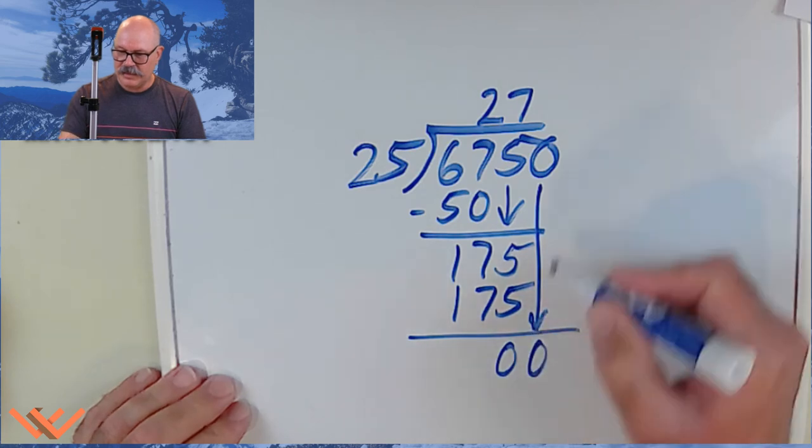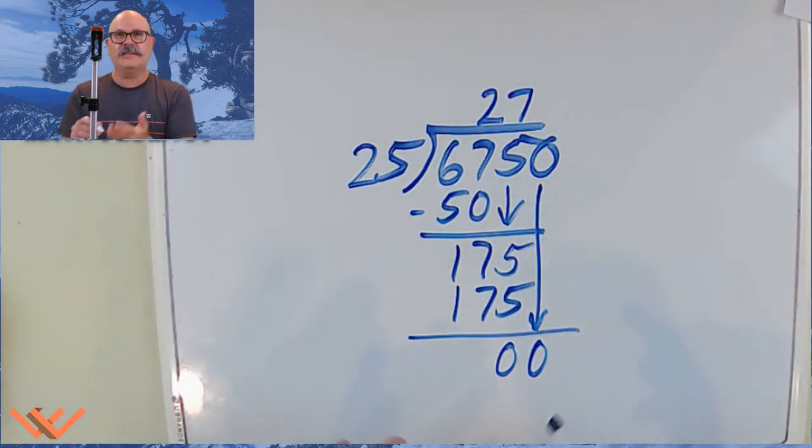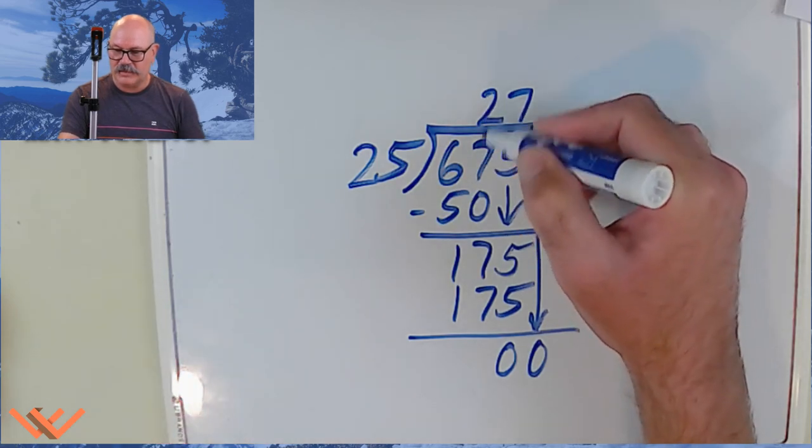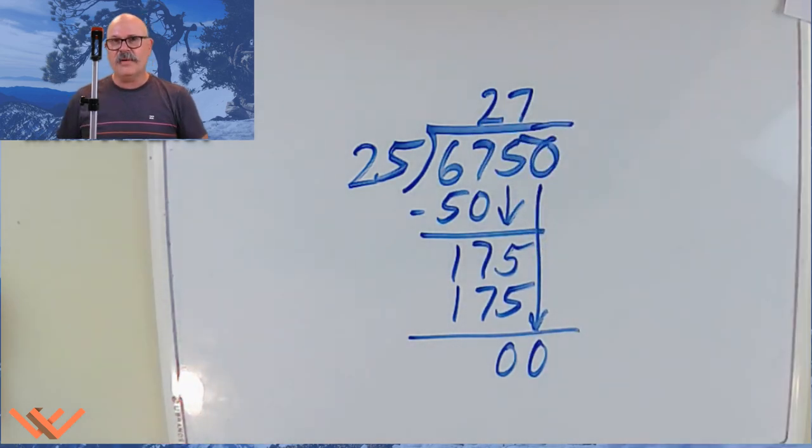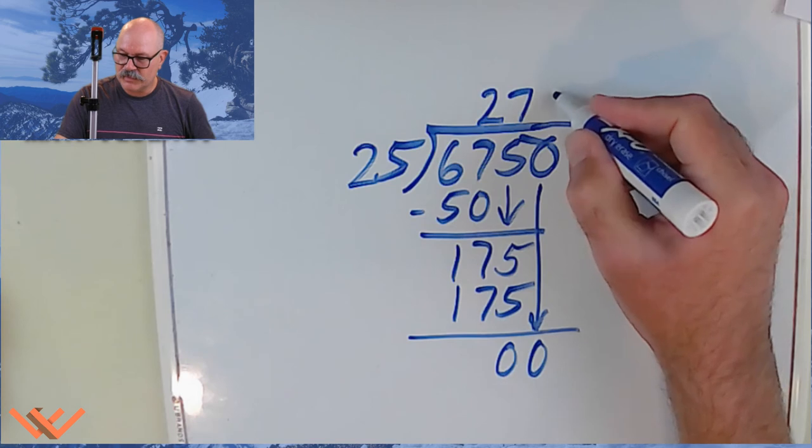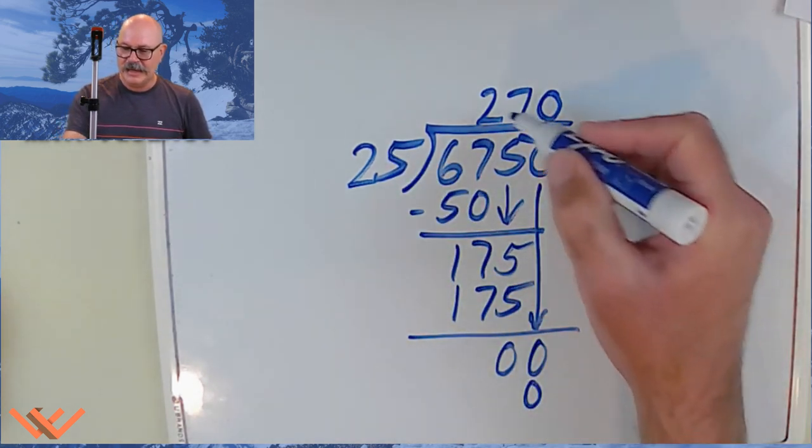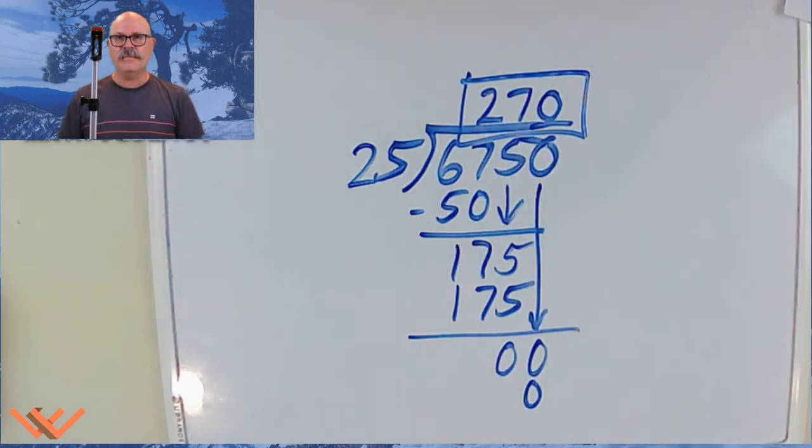I'm going to bring that 0 down here. So, wait a minute. I still have to finish this out. Because if you look at my columns, this is lined up, this is lined up. So, I need to multiply that by 0 times 25 is 0 to get my answer.